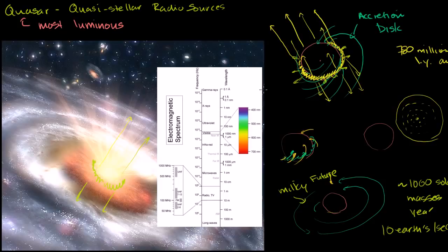Most quasars are actually emitting electromagnetic radiation across the spectrum, all the way from x-rays all the way down to infrared.